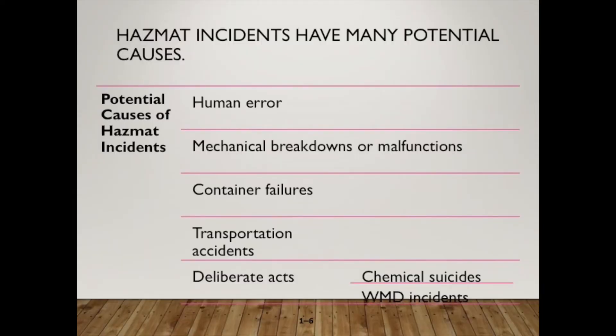Hazmat incidents have many potential causes. They include human error — somebody making a mistake, mixing their own chemicals, something like that. Mechanical breakdowns or malfunctions, maybe a piece of equipment failing and releasing a hazardous material. Container failures could be something like a release from a jug. You also have transportation accidents, and finally deliberate acts, which include chemical suicides and WMD.